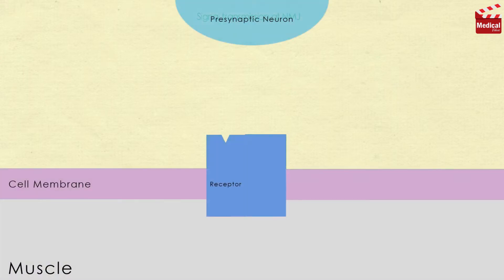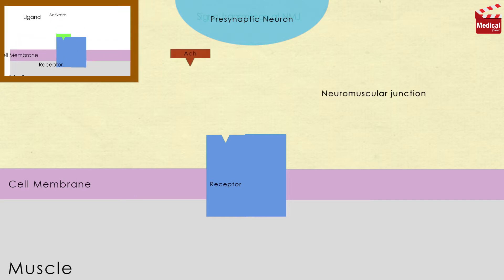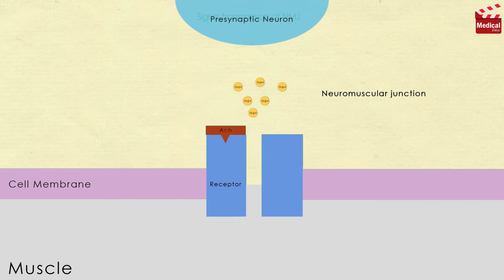The receptors at the neuromuscular junction are channel-linked receptors. That means when acetylcholine binds to its receptor, the ion channel that is linked to the receptor opens, allowing sodium ions to pass through and enter the cell, causing depolarization and initiation of the response within the cell.